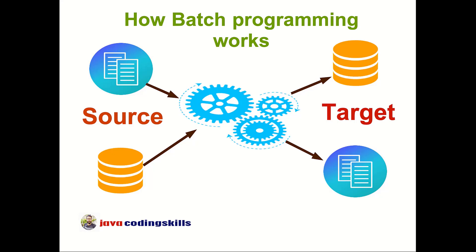Now, how do we achieve this architecture in code? There are a couple of ways. You can use a Unix script to read the data and write it somewhere else. You can use a Python script to do the same thing, or a traditional Java program where you can read a file, read the database, or anything. You can also use any other language available in the market — .NET, PHP, Scala — no matter which language you use, you can achieve the same thing.